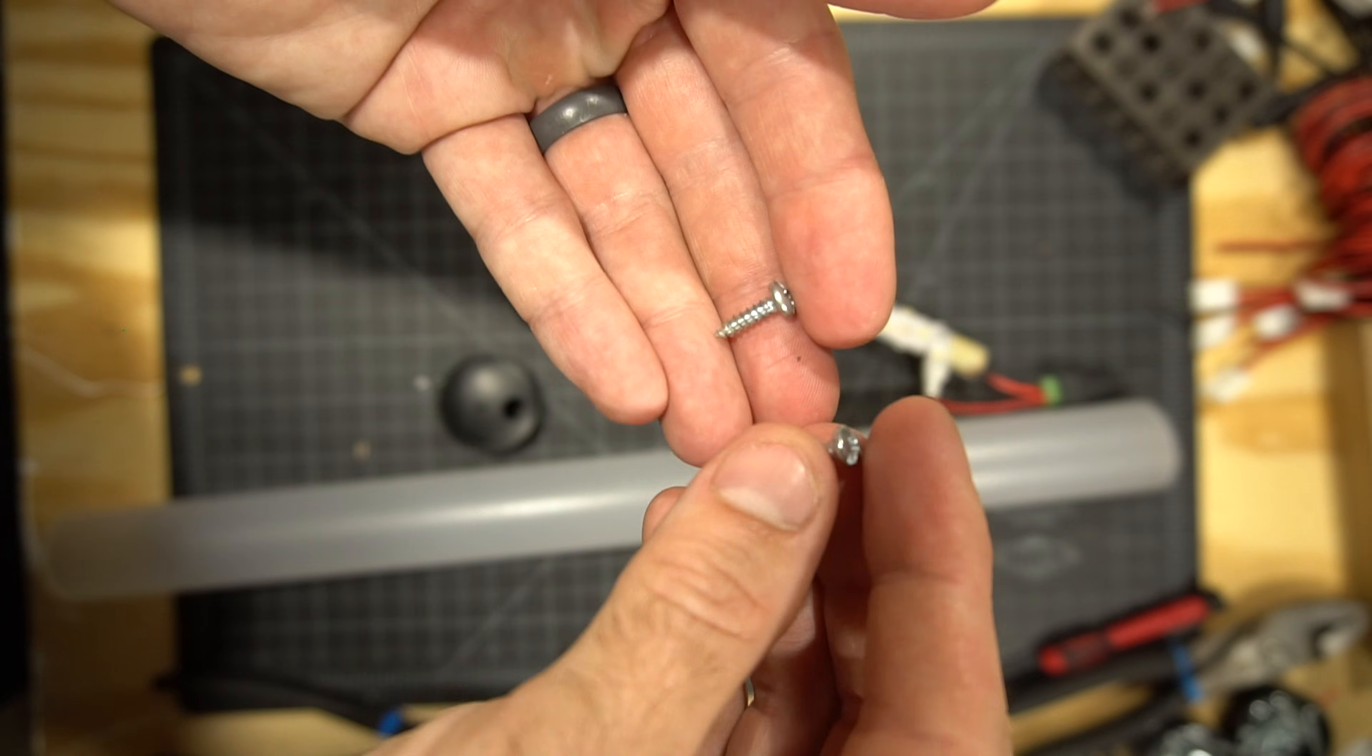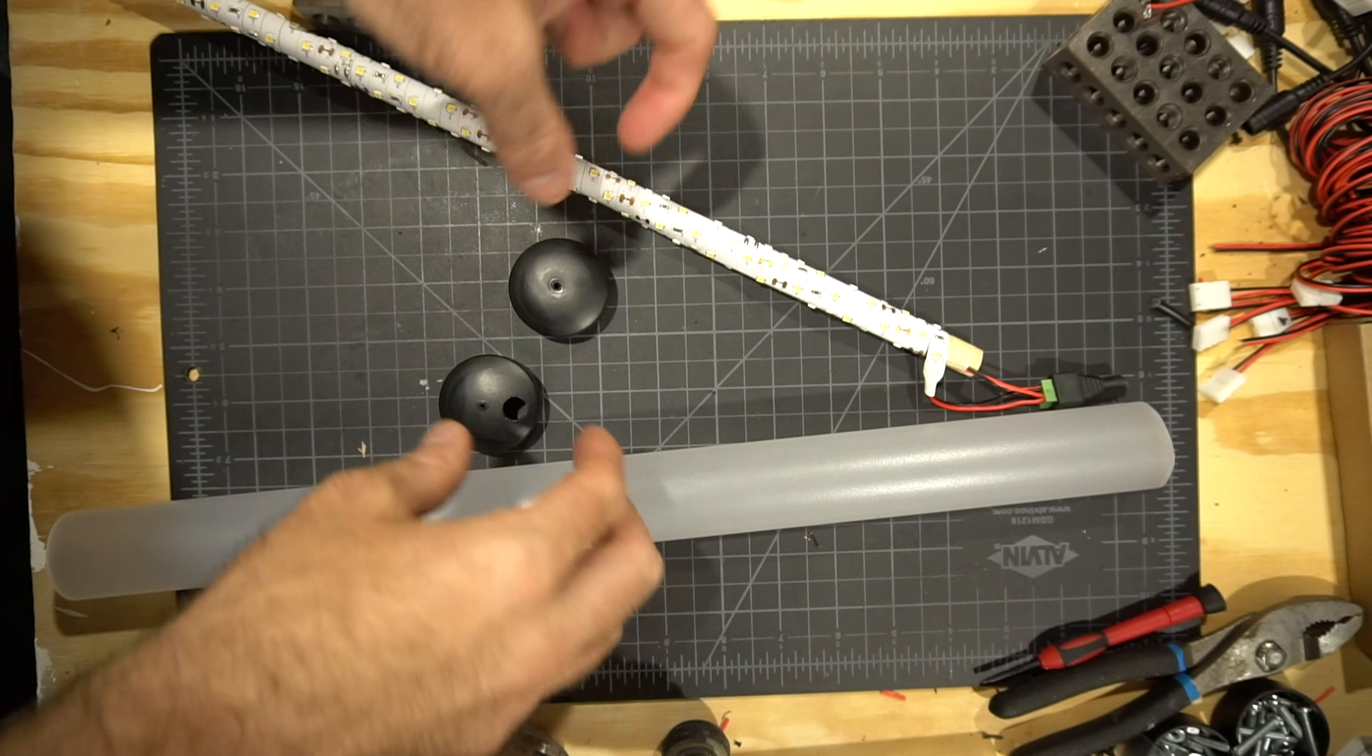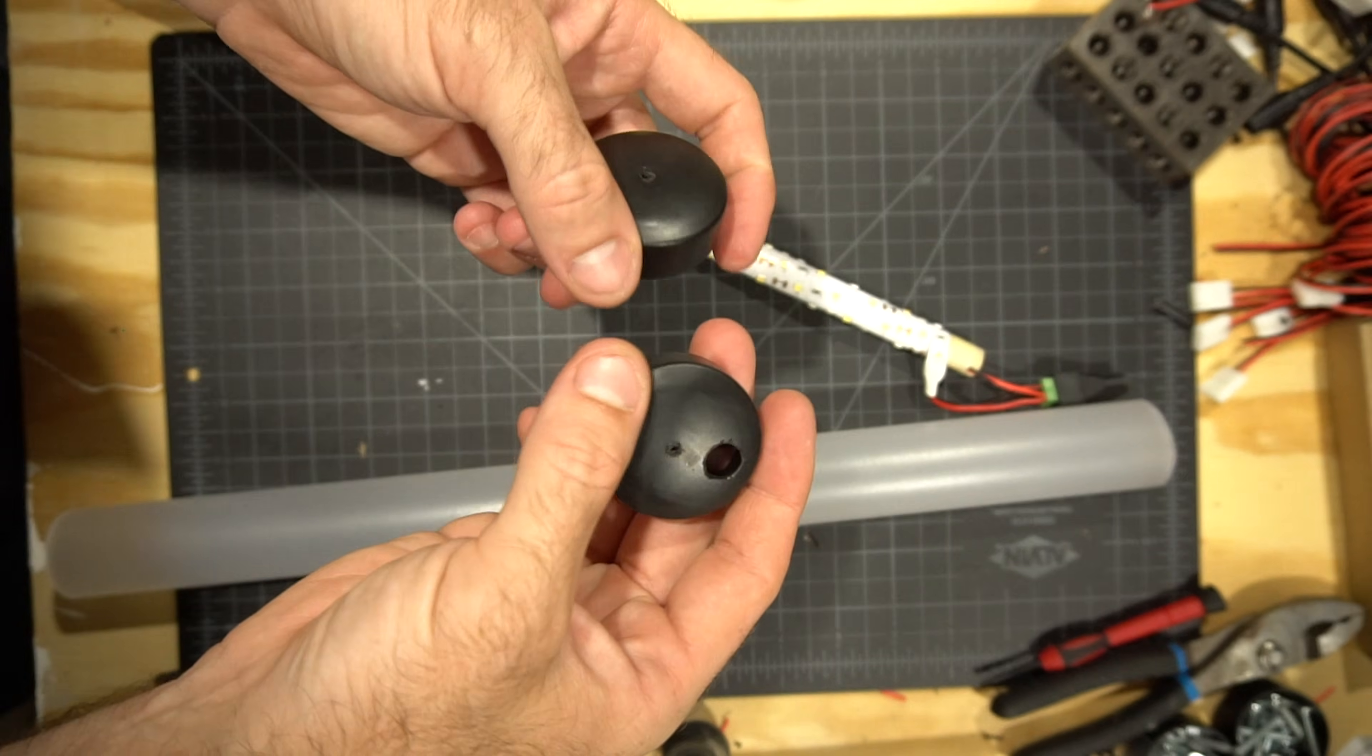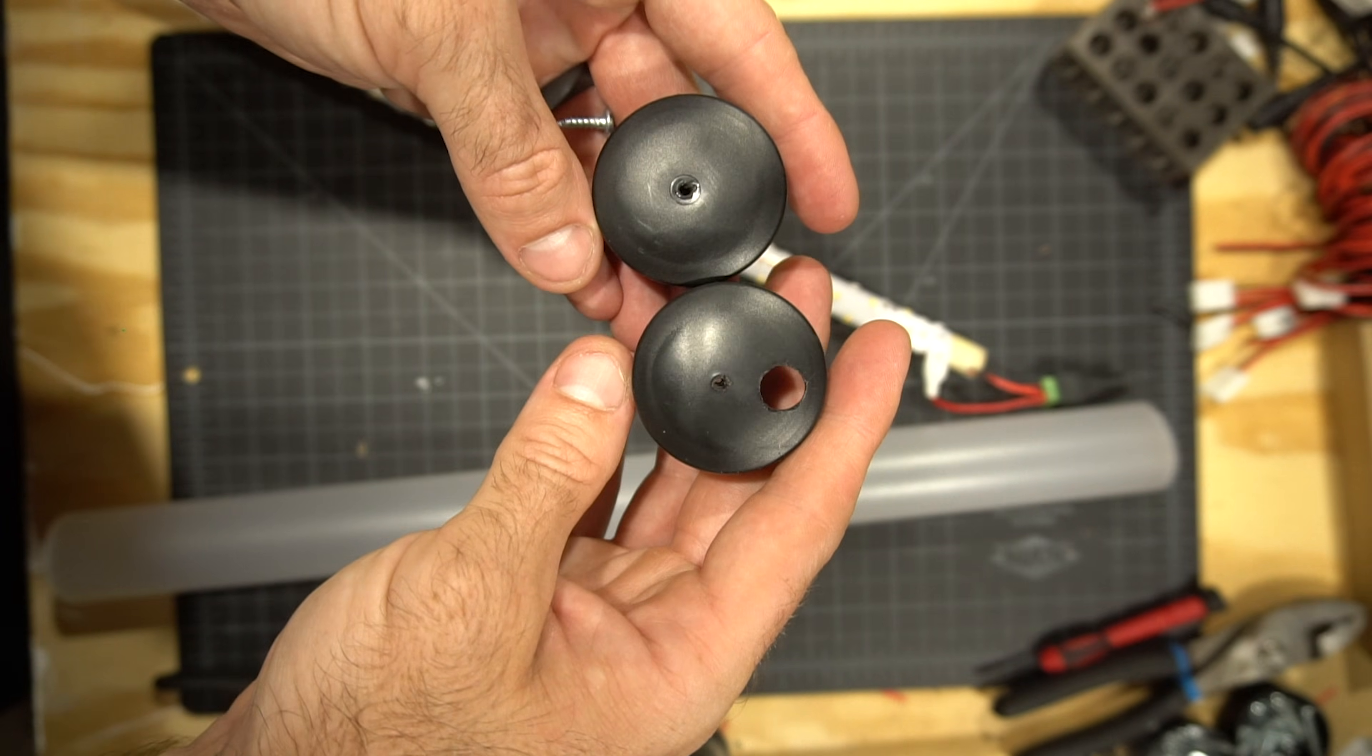For this last little bit, go ahead and grab a couple of tiny screws. I just used a handful of small ones that I had laying around. Get your end caps, your acrylic tube, and that LED stick we just made.